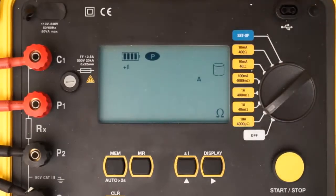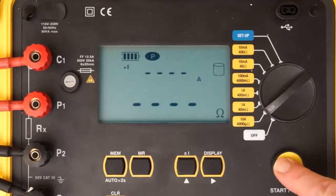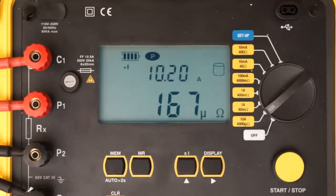To begin the test, press the start-stop button once. After a moment, the resistance and current measurements appear in the LCD. As you can see, current is slightly over 10 amps, and resistance is approximately 167 micro-ohms.